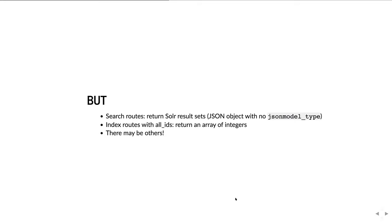A Solr result set looks like a JSON object with no json_model_type. It has pagination — page one and you can request page two, three, etc. — and then has a results array with a bunch of Solr objects, which contain inside them the JSON model objects they're talking about. Index routes with the all_ids parameter will return an array of integers — just a JSON array with the IDs for that particular route. Some routes return PDFs or XML, like that's how you get EADs out of the system.